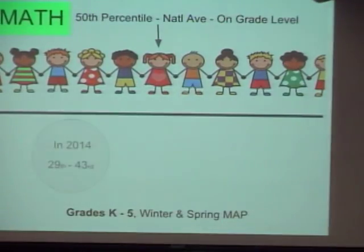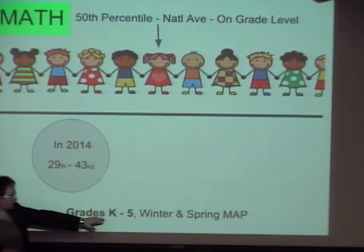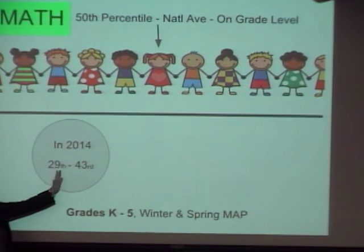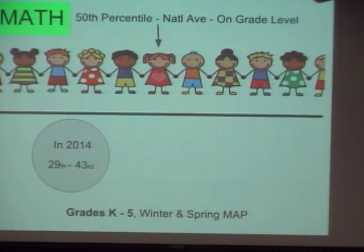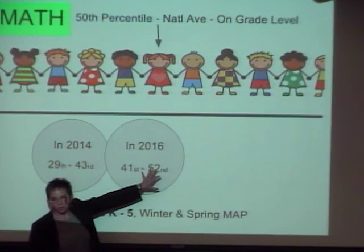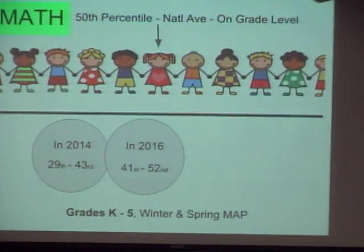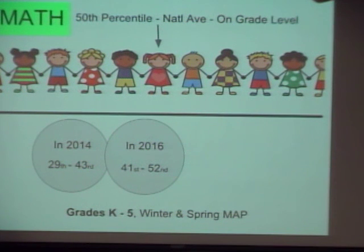For math, back in elementary grades — kindergarten through fifth grade — in 2014, when you rank our scores compared to all kids across the country, we fell in the range of 29th to 43rd percentile, with our younger grades at the higher end two years ago. Here's where we are now: looking at winter and spring, we're right at where we need to be in terms of grade level — a little bit above or a little below — and that's despite poverty, despite mobility, despite the ESL population, despite all the challenges. The reason I've stayed here is because we're focused on the results of each individual student.